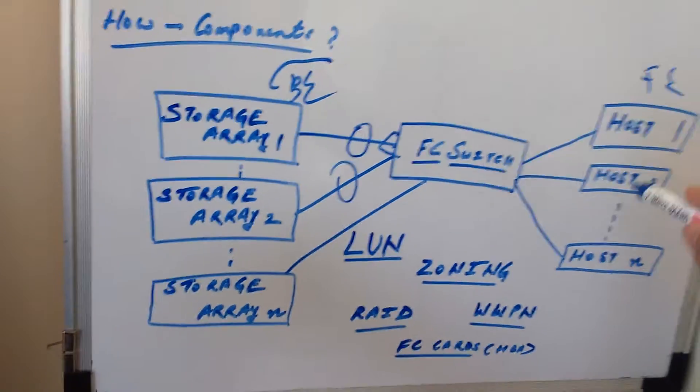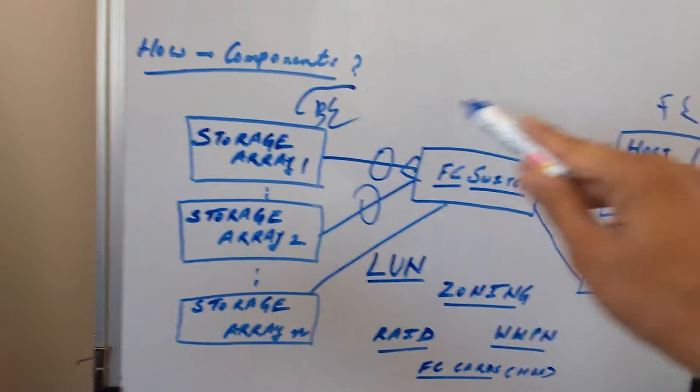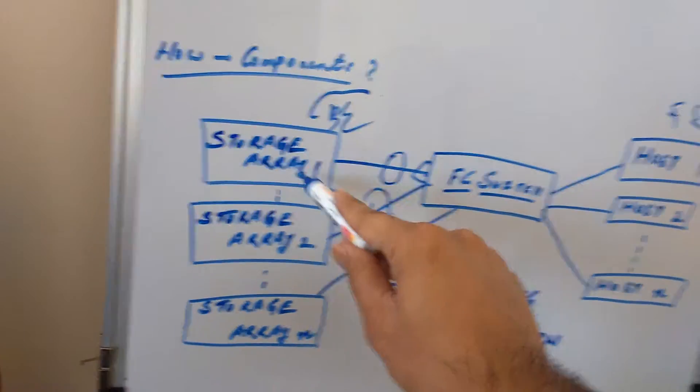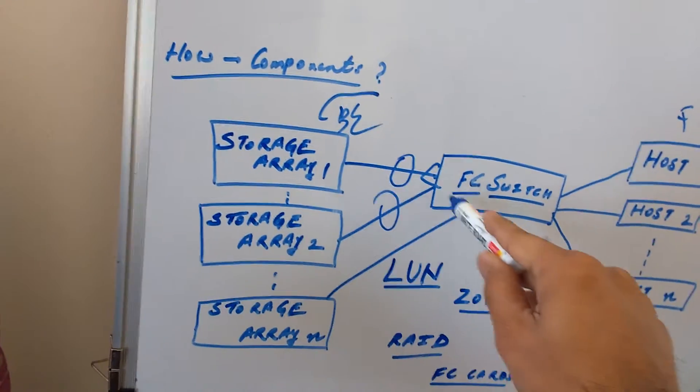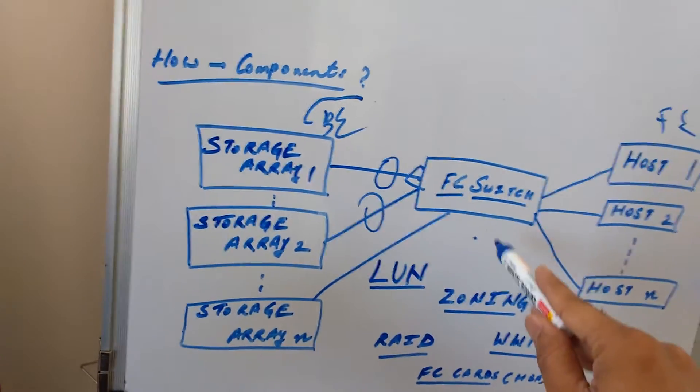So at the front end, we have hosts. These hosts are connected to the storage devices—storage boxes—using the FC switch.